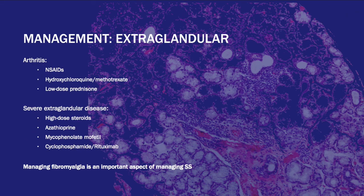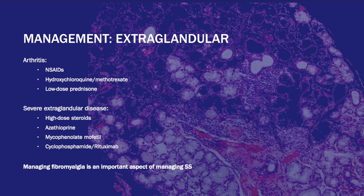For extra-glandular manifestations, start with NSAIDs for arthritis, and if that fails use hydroxychloroquine, methotrexate, or leflunomide in addition to low-dose prednisone. For CNS or pulmonary manifestations in severe cases, as well as severe kidney involvement or systemic vasculitis, use high-dose steroids, azathioprine, mycophenolate mofetil, cyclophosphamide, and rituximab. It's also very important to manage fibromyalgia, since it's very common in Sjögren's patients.